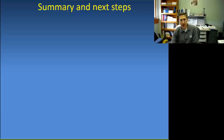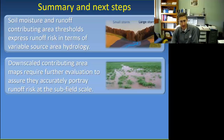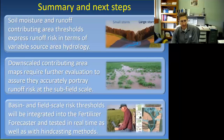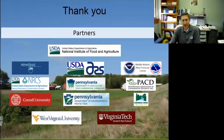To summarize, we're looking at soil moisture and runoff contributing area thresholds using variable source area hydrology to get down to a field-scale tool. We need to further evaluate these downscaled contributing areas, which is ongoing. We're integrating these into our fertilizer forecaster tool, which will hopefully be online in the four watersheds where we're working by the end of summer. Thank you for your attention.